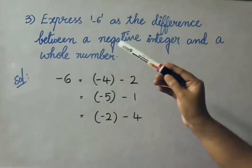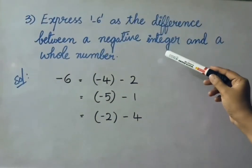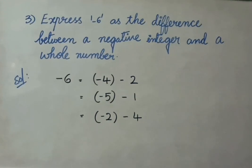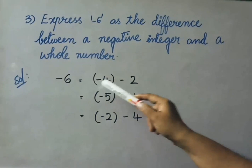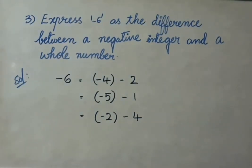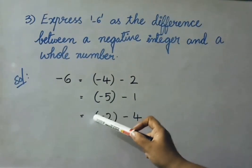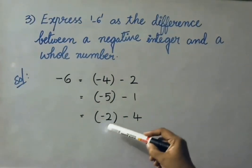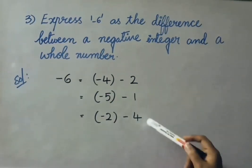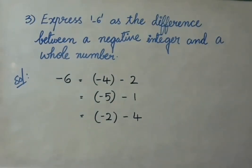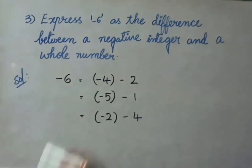See the third sum now: express minus 6 as the difference between a negative integer and a whole number. We need to express minus 6 as the difference of two numbers — one is a negative integer and the other is a whole number. Solution: minus 4 minus 2 equals minus 6 (minus 4 is a negative integer, 2 is a whole number). Another pair: minus 5 minus 1 equals minus 6 (minus 5 negative integer, 1 whole number). Another: minus 2 minus 4 equals minus 6. In this way we can write any combination of a negative integer and a whole number to express minus 6.